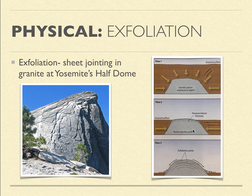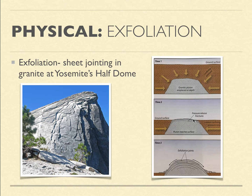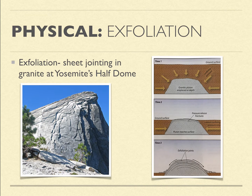Once everyone starts getting off, you're able to stretch out and expand. In that process, it fractures along these weaknesses within the rock, creating joints. Then we create this very large bulbous or rounded feature.